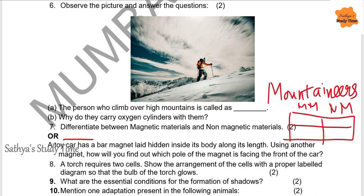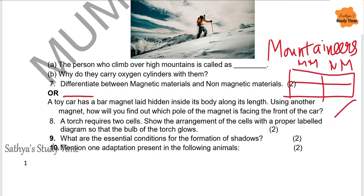Note that an 'or' option is given, so you can write any one. A toy car has a bar magnet hidden inside its body along its length. Using another magnet, how will you find out which pole is facing the front of the car? Use a magnet: if you face the north pole towards the car and it repels, then north pole is facing front; if it attracts, the south pole is facing front. Based on repulsion or attraction you can find the pole facing the front.